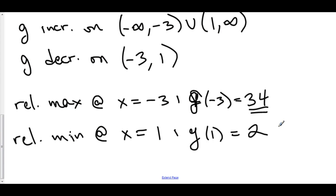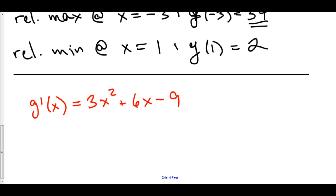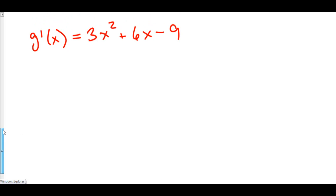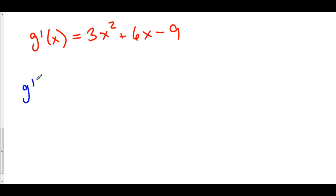Let's now continue with our second derivative analysis. To perform our second derivative analysis, we first need a second derivative. Our first derivative was 3x squared plus 6x minus 9, so let's take the derivative of that. g double prime of x is equal to 6x plus 6.